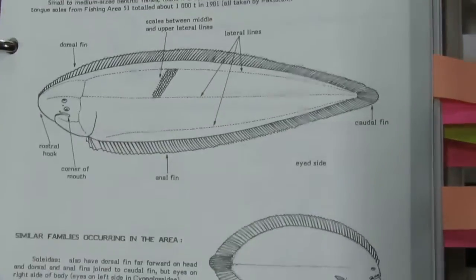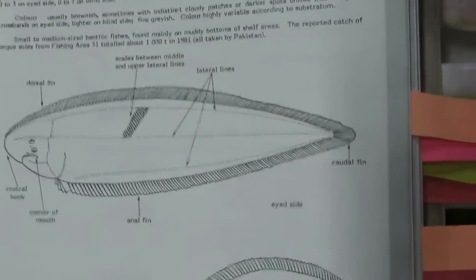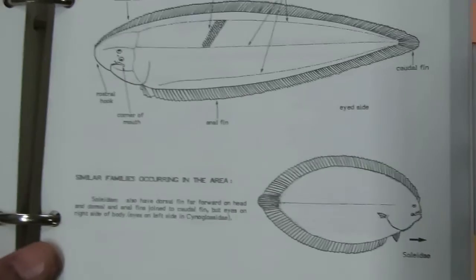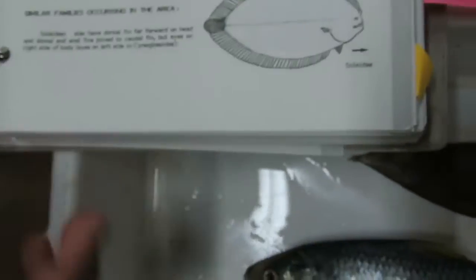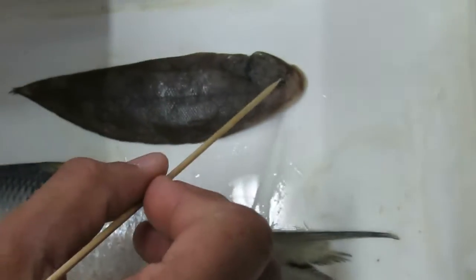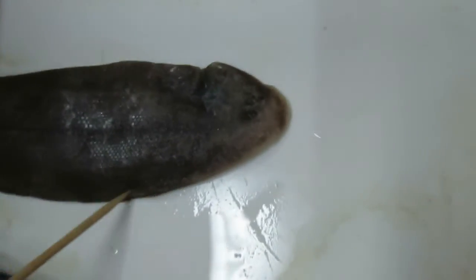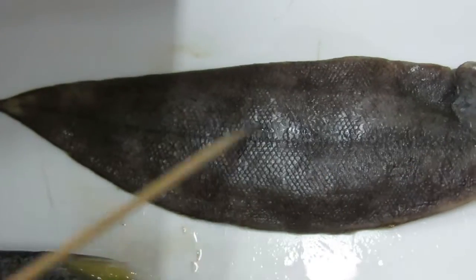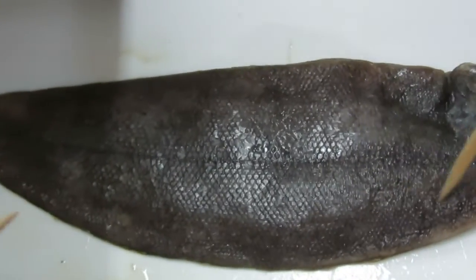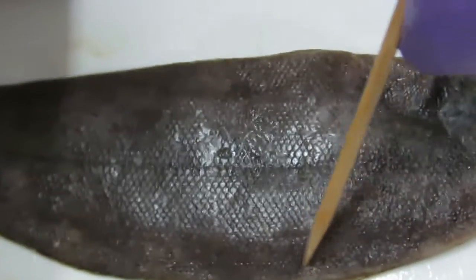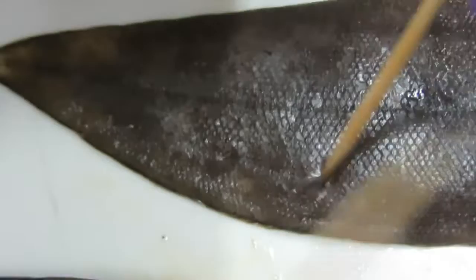First we discuss Cynoglossidae. The lateral line is variable — 0 to 3 on the eye side and 0 to 2 on the blind side. You can find the lateral line on the dorsal side and the middle one. On the blind side you can find only a single lateral line.